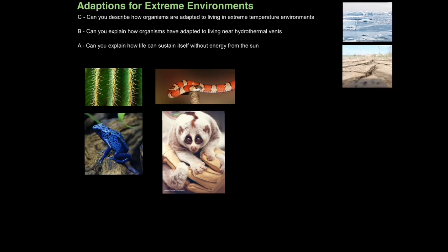In this tutorial we're going to look at how organisms are adapted to living in extreme environments. The first aim is can you describe how organisms are adapted to living in extreme temperature environments? Then can you explain how organisms have adapted to living deep down in the oceans near hydrothermal vents? And then finally can you explain how life can sustain itself without energy from the sun?